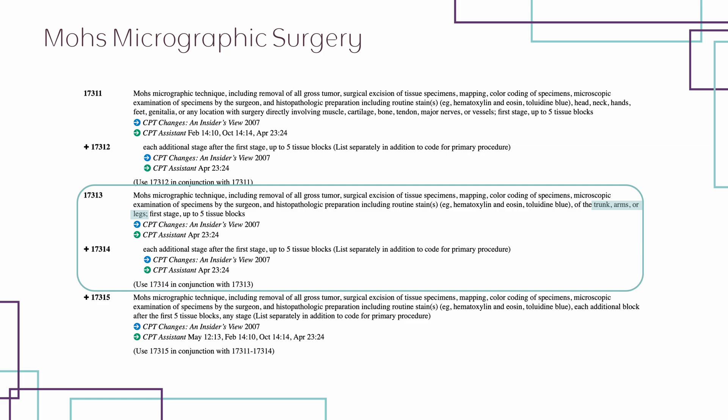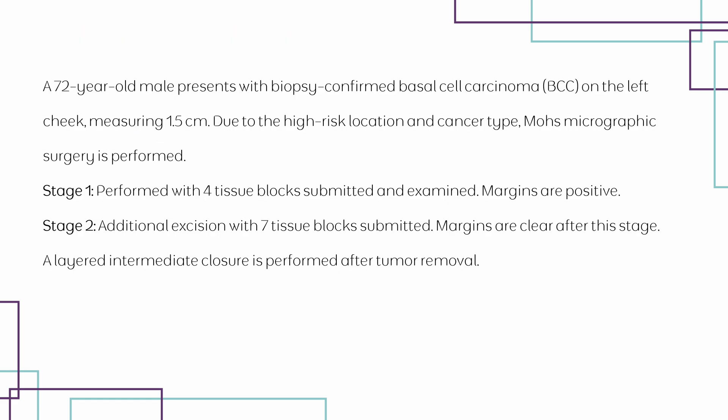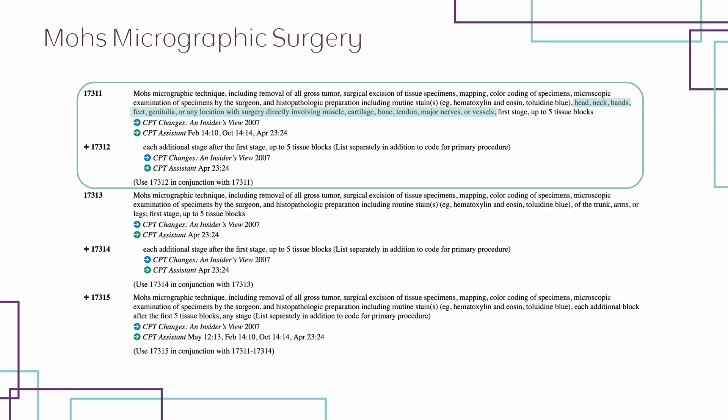Going back to the scenario to refresh on the location where the Mohs procedure is performed — the anatomic location is the left cheek. Therefore, we should be in the first code family since the cheek is located on the head.